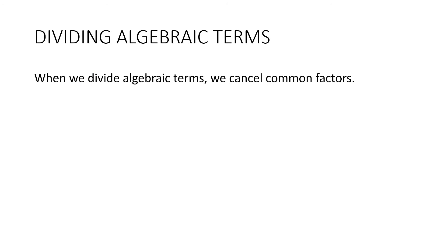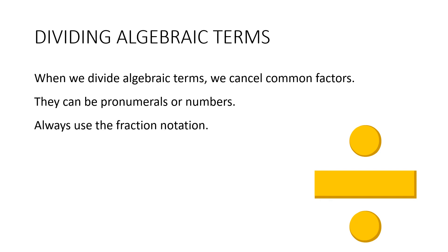So let's move on to division. Now, when we divide algebraic terms, we cancel common factors. And these factors can be pronumerals or numbers. We always use fraction notation. So let's have a look at this one. 12x divided by x. We're going to write it like this. Now we can see a common factor there of x. So we can cancel that out. And our answer is going to be 12.